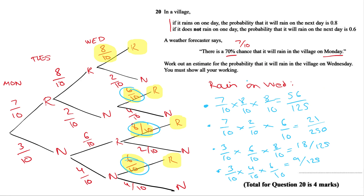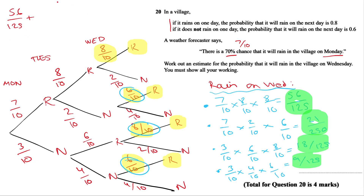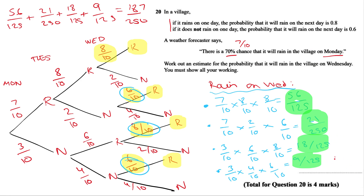We've worked out all the probabilities of it raining on Wednesday — these are the different paths that can occur. To work out the total, add all these numbers together: 56 over 125, plus 21 over 250, plus 18 over 125, plus 9 over 125. That gives a grand total of 187 over 250. So the total probability it will rain in the village on Wednesday is 187 over 250, and that is worth 4 marks.